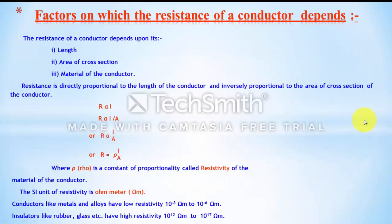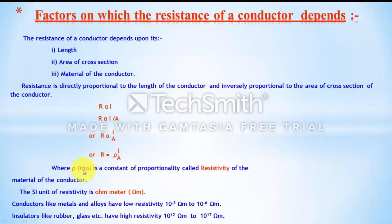Since R is proportional to L and inversely proportional to A, combining these gives R proportional to L by A. Replacing the proportional sign: R equals ρ·L by A, where ρ (rho) is the resistivity of the material conductor. The SI unit of resistivity is Ohm·meter.